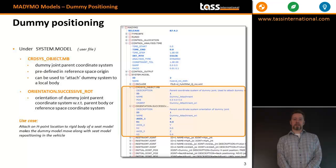In the user file, the dummy joint falls under the system model. It's a coordinate system object that can be used to position the dummy in the reference space or relative to a different local body.